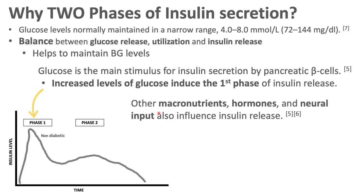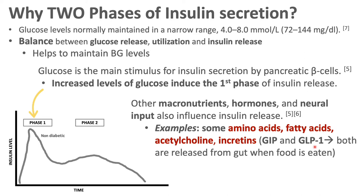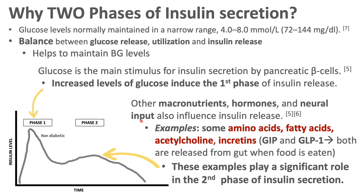Other nutrients and signals also play a role: macronutrients, hormones, neural input, amino acids, fatty acids, acetylcholine, and incretins such as GIP and GLP-1, which are released from the gut when we eat. These factors play a significant role in phase two insulin secretion. Glucose has a more immediate effect, while these other macronutrients and hormones have a more delayed effect — which is why we get the second phase.